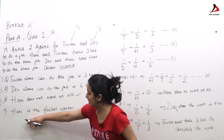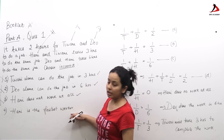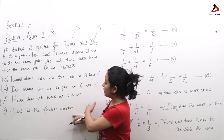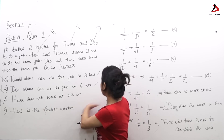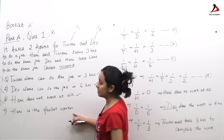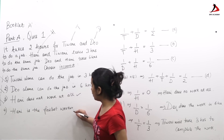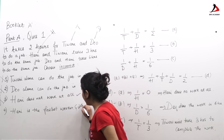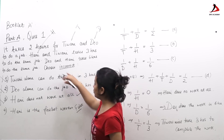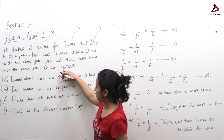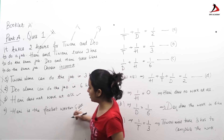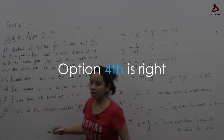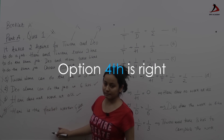Option 4 states that Hari is the fastest worker, which I can clearly say is false since Hari does no work at all. Since I have to choose the incorrect option, the fourth option is my answer.